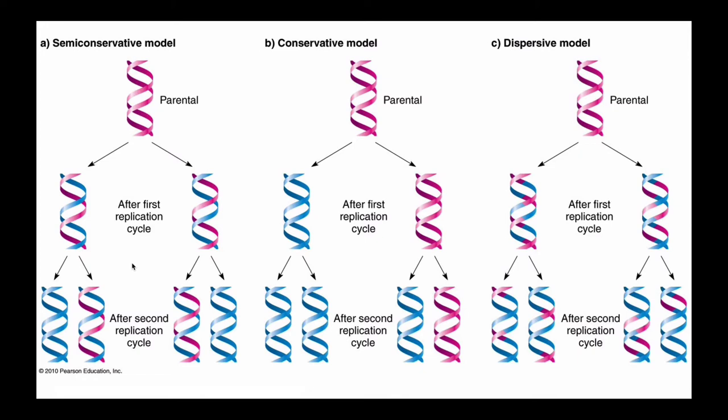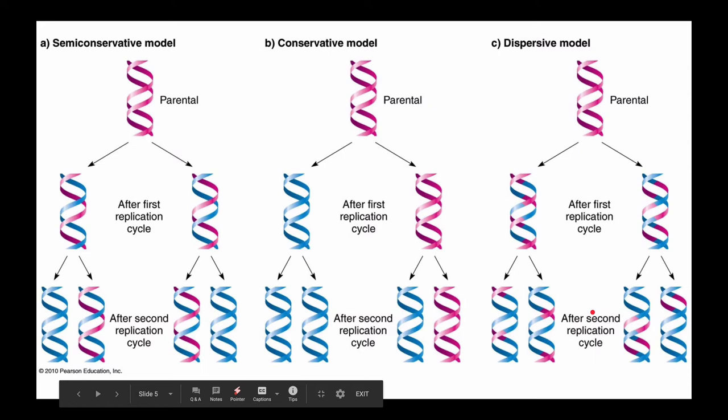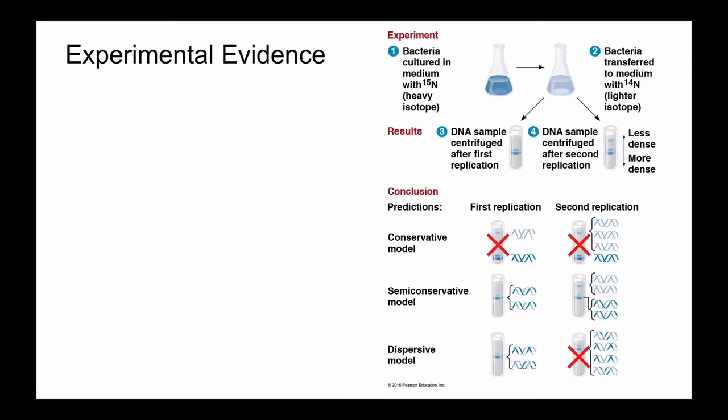I think it's important to pause for a minute and consider the outcomes of these three models. In a semi-conservative model, there are going to basically be two cells after two rounds of replication that still have a considerable amount of that parental DNA in them, and then two cells that do not. So it'd be like a 50-50. In a conservative model, you would have one cell that would have all that parental DNA, and three that would not. Finally, in a dispersive model, all four cells would have some amount of that parental DNA. There's a tendency in science that typically the easiest or the simplest explanation probably is the one that's going to win out. This dispersive model is certainly the most complex, and we're going to find that that was not supported by the evidence. What was supported?